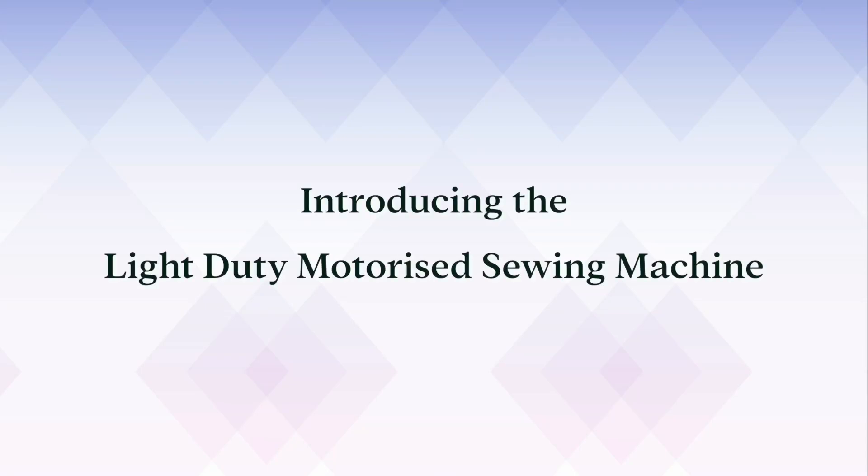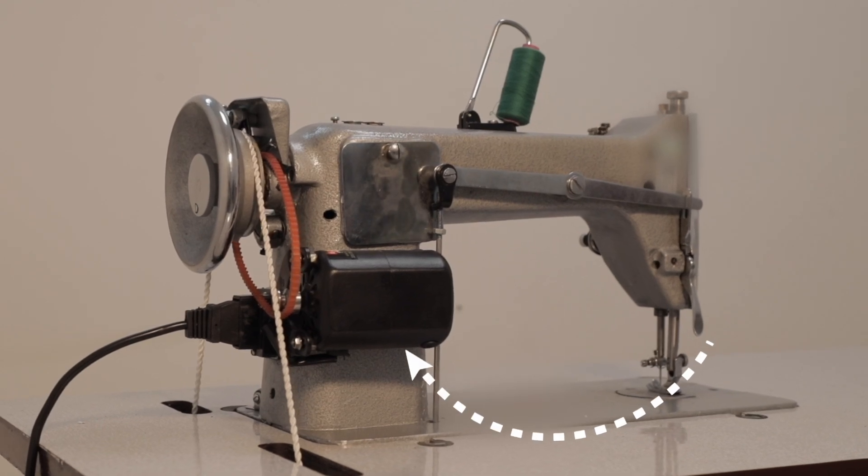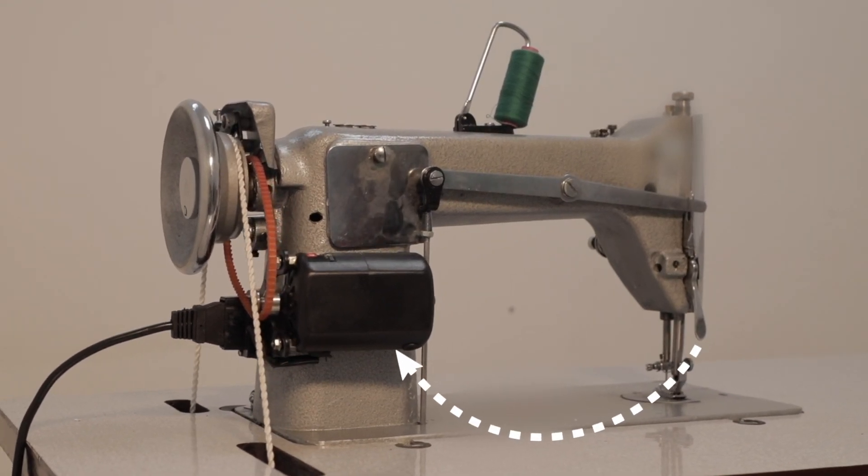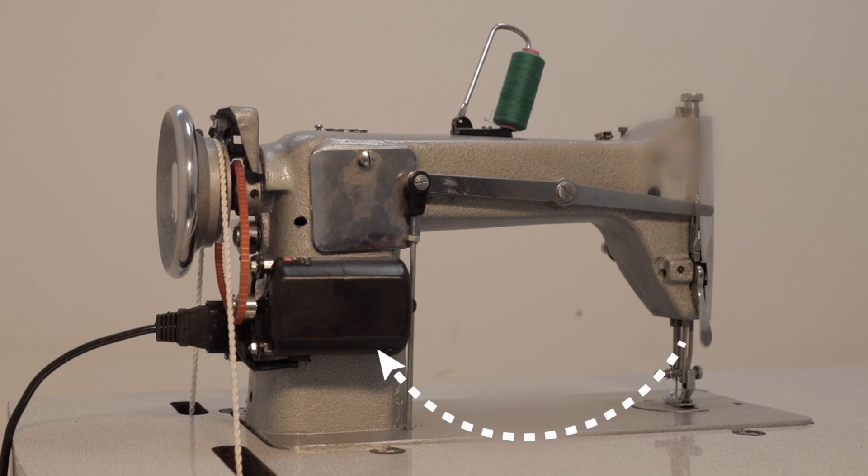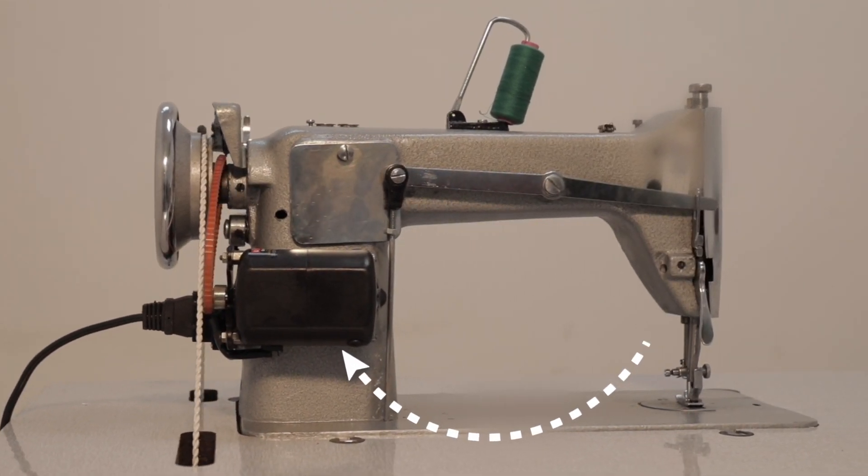Introducing the light duty motorized sewing machine preferred by boutiques. This machine is fitted with an electric motor with higher RPM that enables it to achieve 1800 stitches per minute, thus increasing productivity.